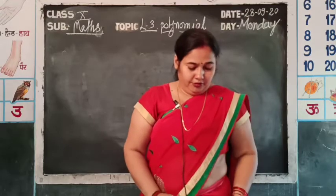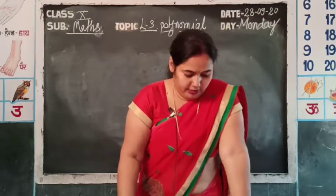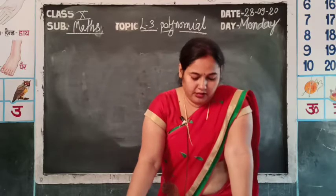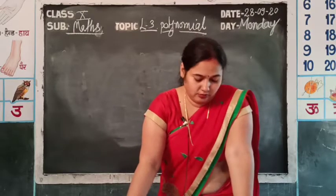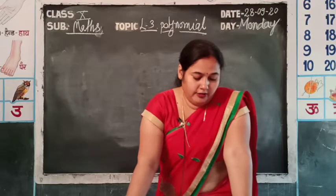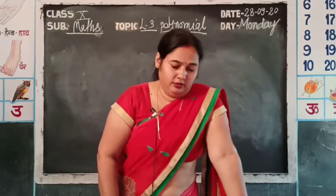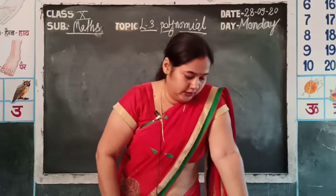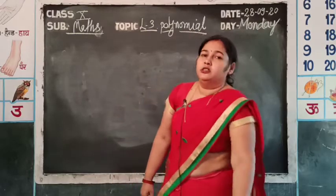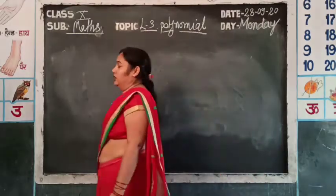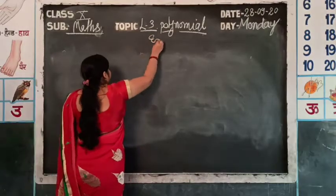Exercise 3.1, Question number 1: Find the zeros of the quadratic polynomial and verify the relation between the zeros and the coefficients. The polynomial is 4x² + 8x. Find the zeros means find alpha and beta — do the factorization.